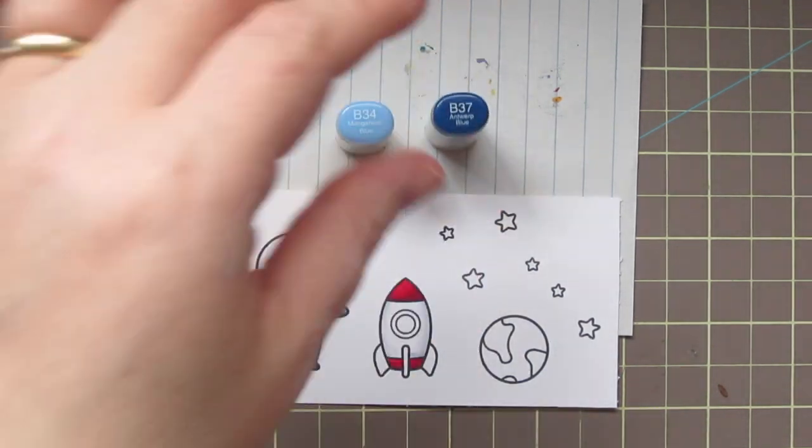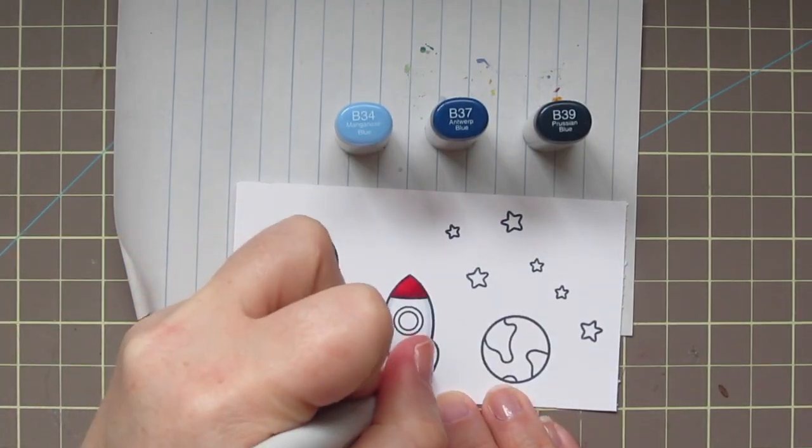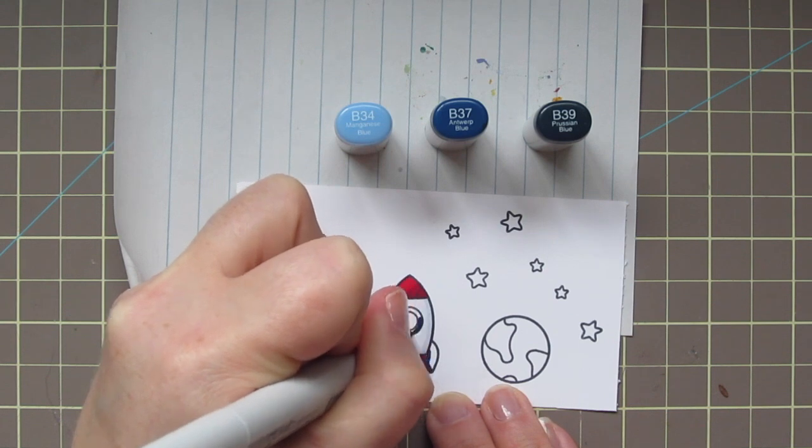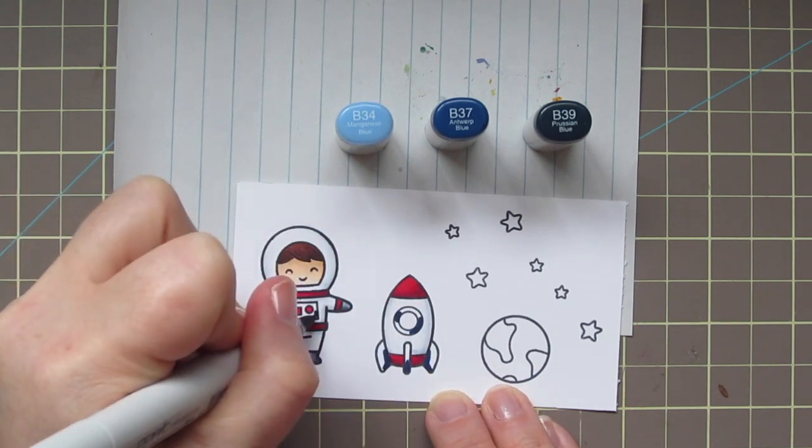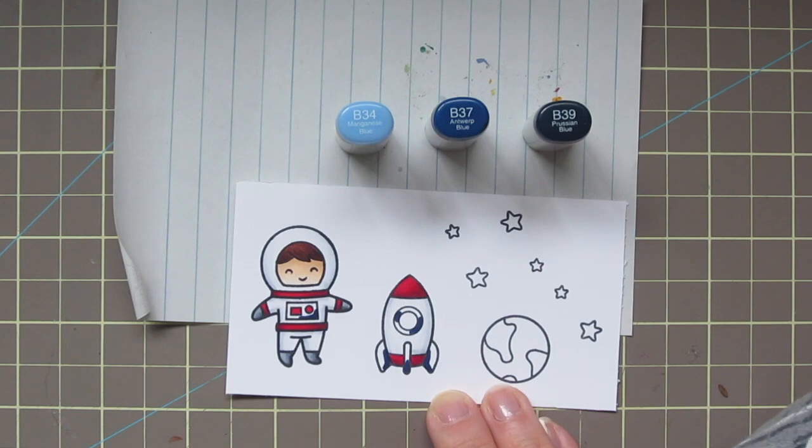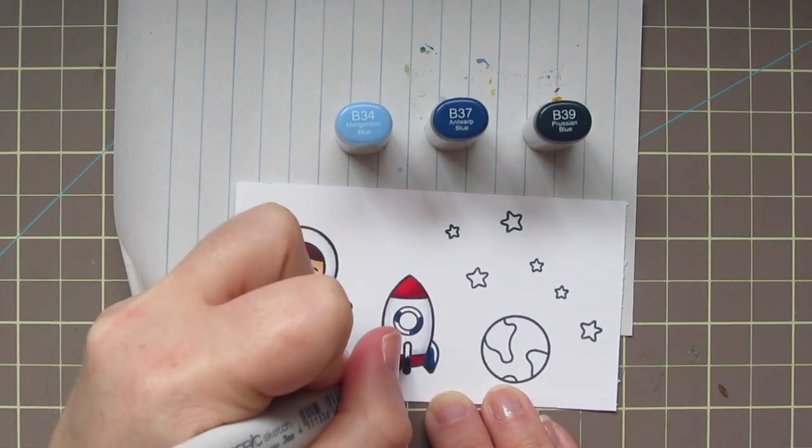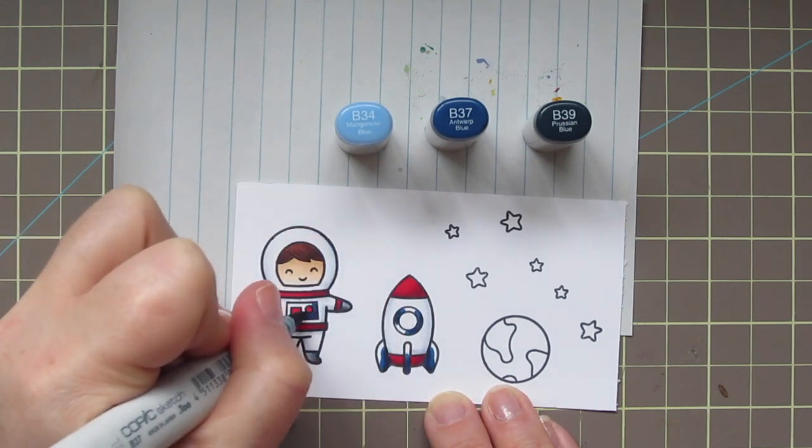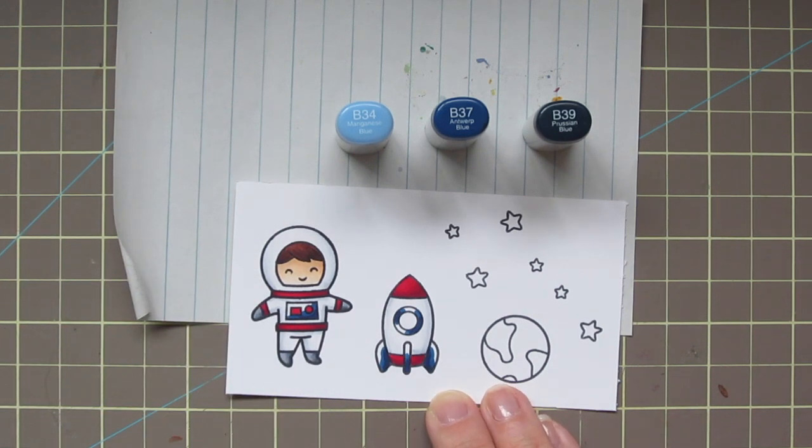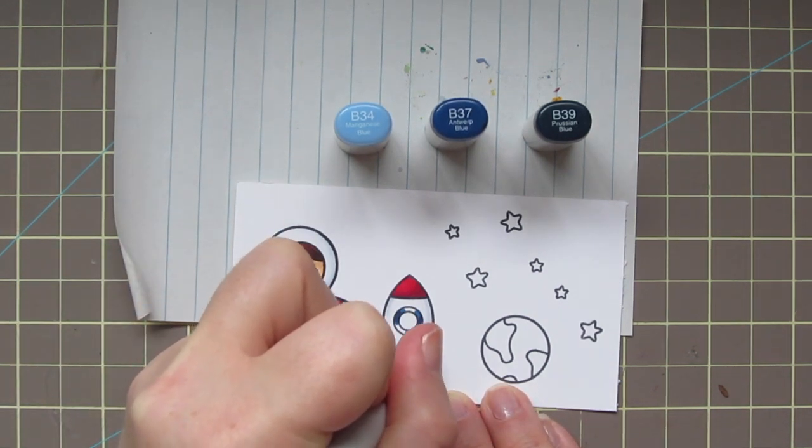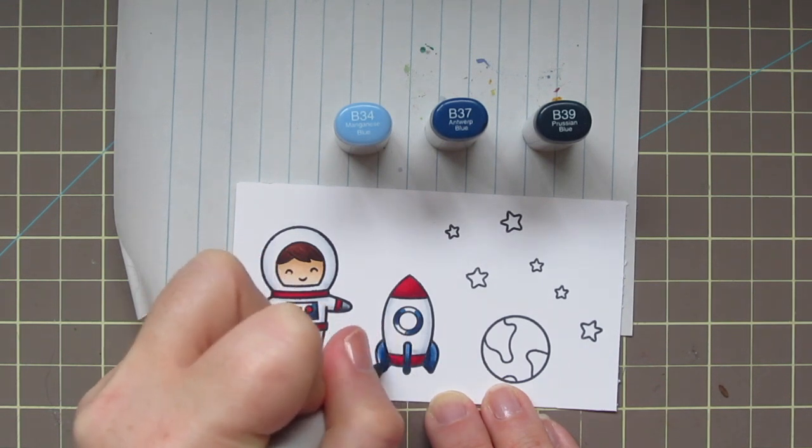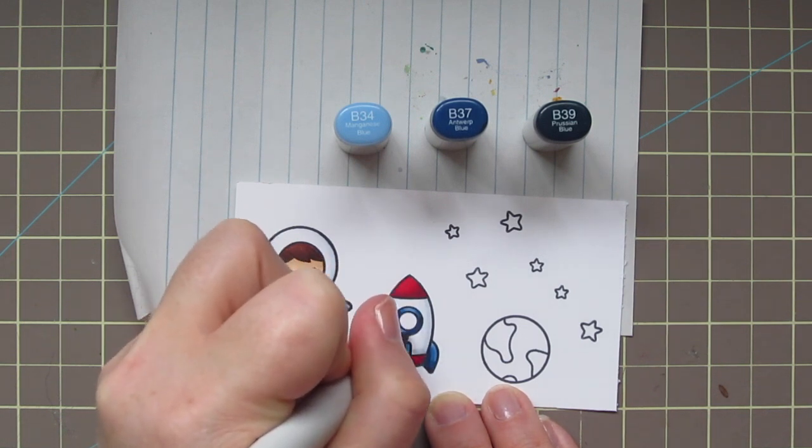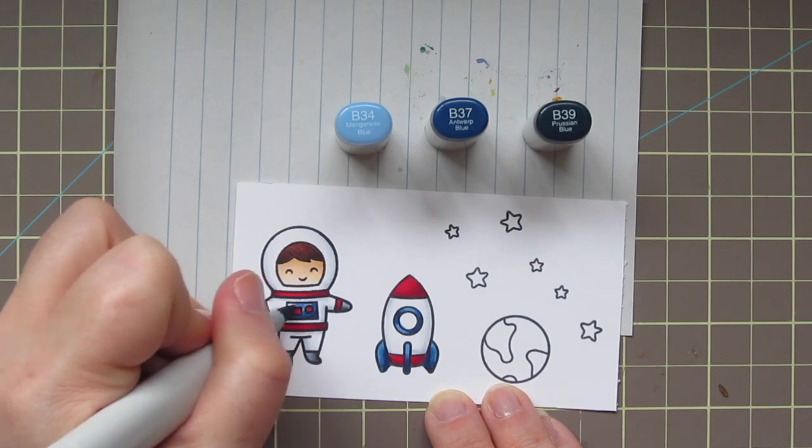For the fins on my rocket, I'm coloring those with B-34, B-37, and B-39. And by the way, I did google that. I was not sure what those were called. So I googled what are the fins on a rocket ship called, and the answer was fins. The fins of the rocket provide aerodynamic stability in flight so the rocket will fly straight. So there we go. I don't know if they're still called the same thing on this size of a rocket ship, but I'm going with it. So anyway, I just colored those darkest to lightest as well and did the little ring around the window. And I also finished off the little panel on the boy's space suit.